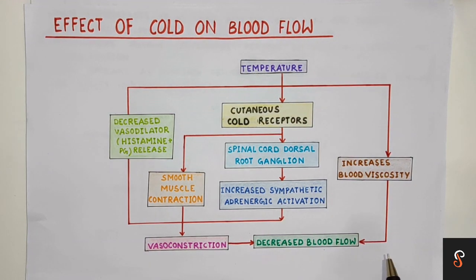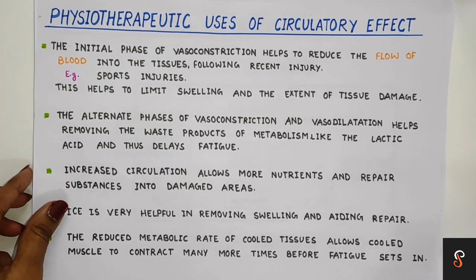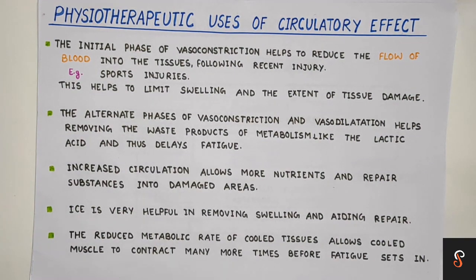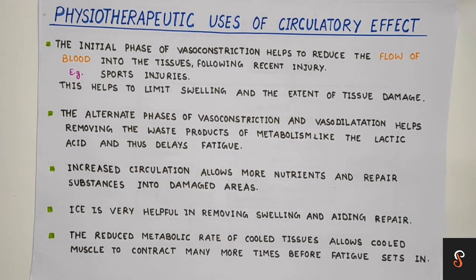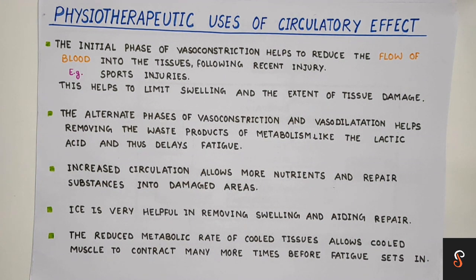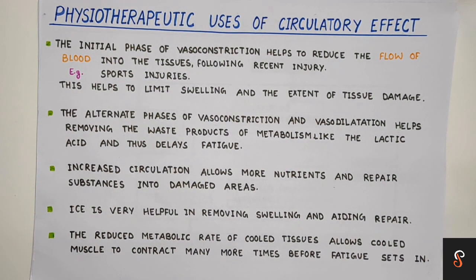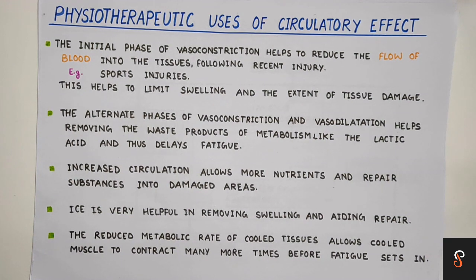The therapeutic use of the circulatory effect: the phase of initial vasoconstriction helps to reduce blood flow into tissue following recent injury, as used in sports injuries, and reduces swelling and tissue damage to some extent. Ice therapy is then followed by some form of compression bandage. Alternate periods of vasoconstriction and dilatation affect capillary blood flow, as fluid and metabolic exchange occurs across the capillary membrane. This phase helps in removal of waste products of metabolism like lactic acid. When circulation increases, it allows more nutrients and repair substances into damaged areas. Cold therapy is very helpful in reducing swelling.